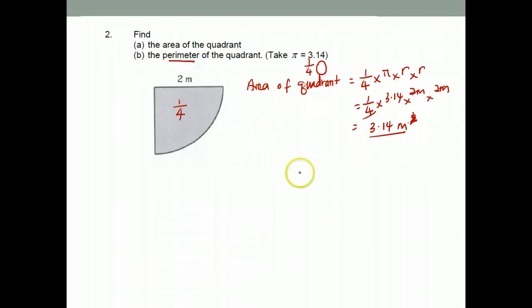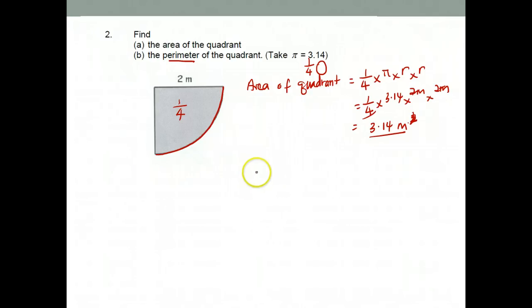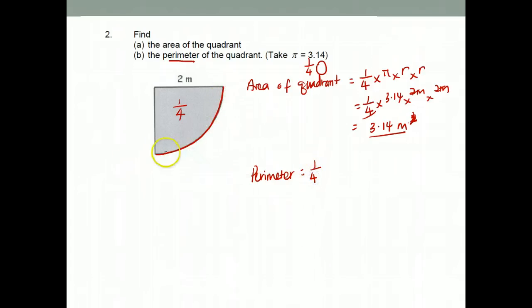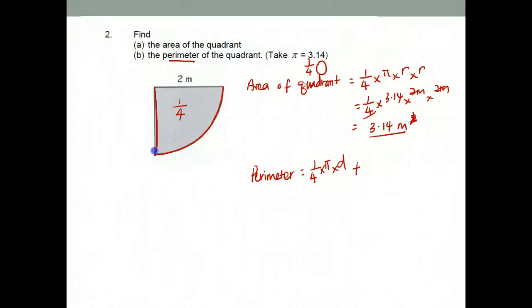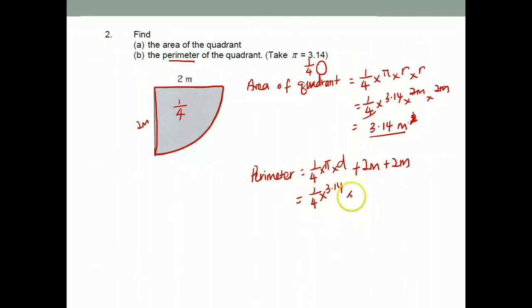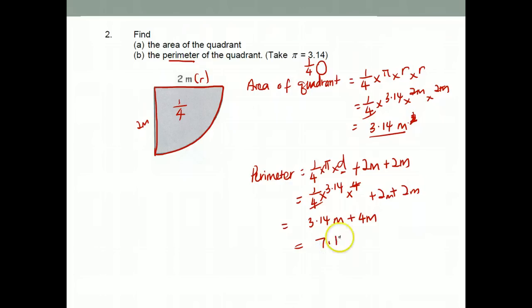How to find the perimeter of the quadrant? Perimeter means the outline, so I need to find one quarter of this arc. Perimeter is first one quarter of the circumference — so times pi times d — plus my two radii, which is 2 meters plus 2 meters. Therefore it's one quarter times pi, which is 3.14, times diameter. The radius is 2 meters, so diameter is 4, plus 2 plus 2. That gives 3.14 meters plus 4 meters, which is 7.14 meters. So the perimeter will be 7.14 meters.